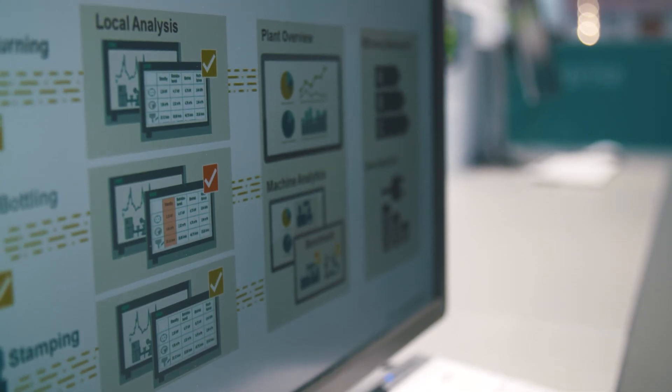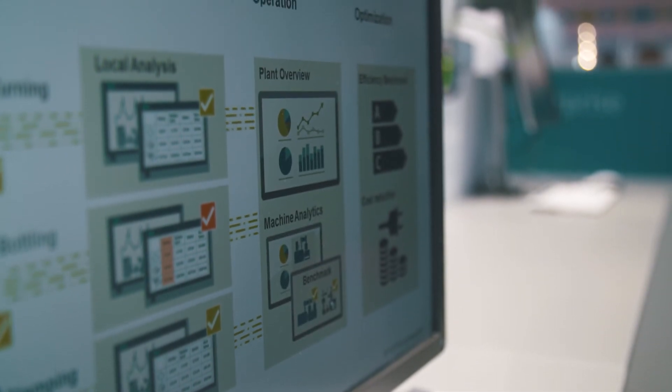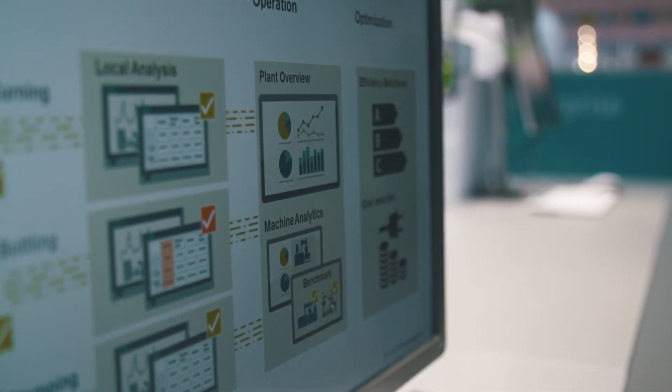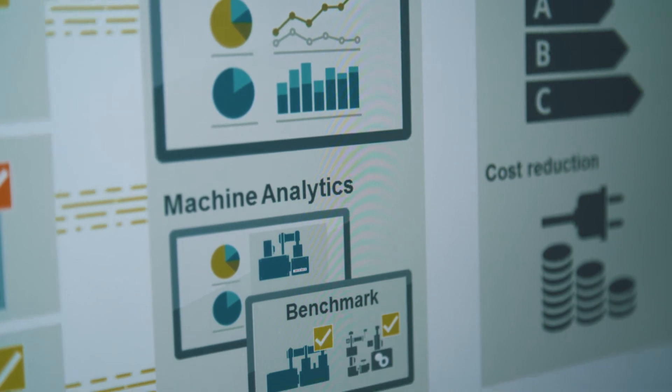The SIMATIC Energy Manager Pro combines both infrastructure data as well as detailed machine data. Data becomes information to derive recommended actions by means of suitable key figures such as the energy performance level, the energy utilization degree, and the integrated analysis functions. This facilitates analyses of various machines, benchmark target requirements, as well as a transparent and comprehensible review of target achievement.